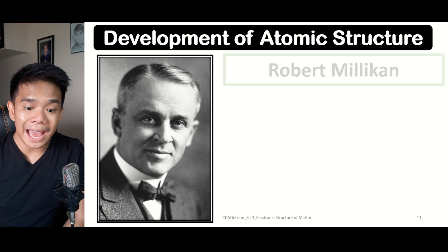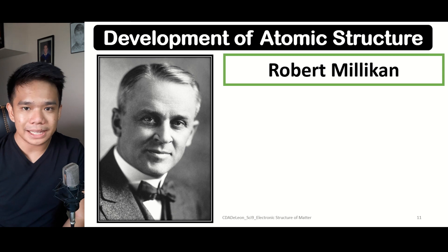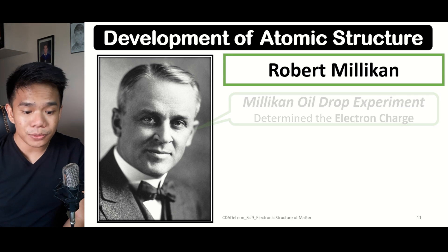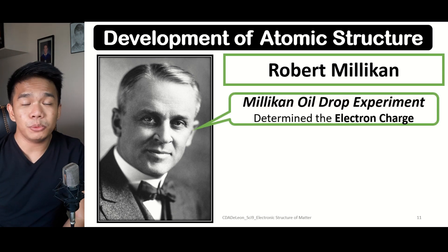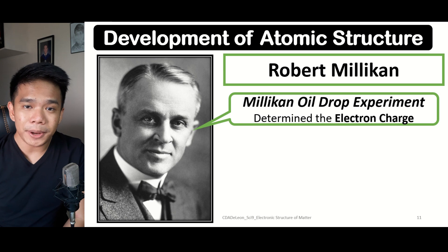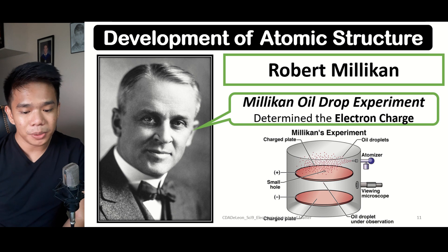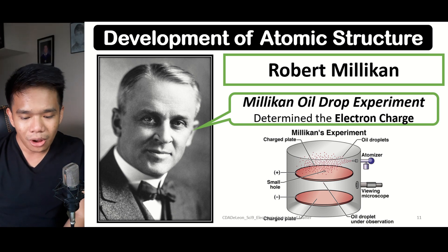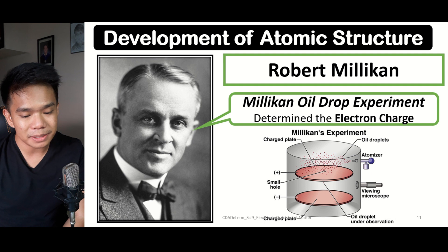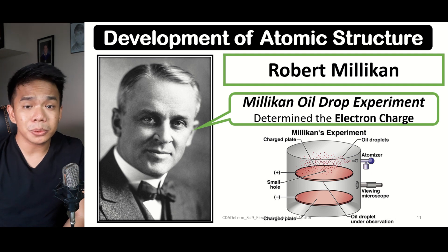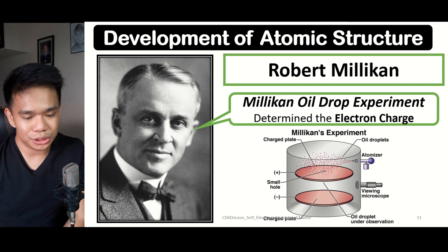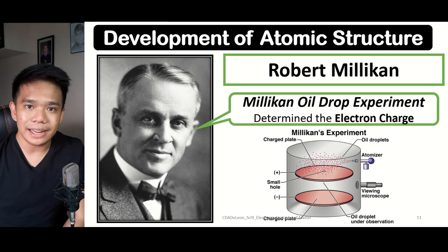Simultaneous with the work of J.J. Thomson, Robert Millikan is famous for his Millikan oil drop experiment, which led to the discovery of the electron charge. In the setup, all of the oil droplets are suspended within a positively charged plate. This led him to conclude that electrons are negatively charged.